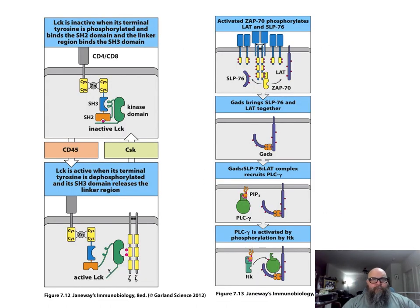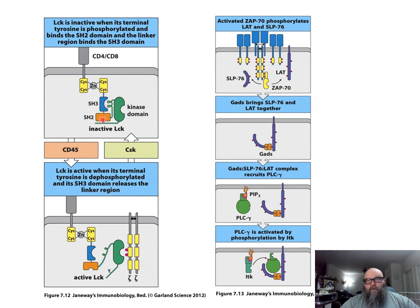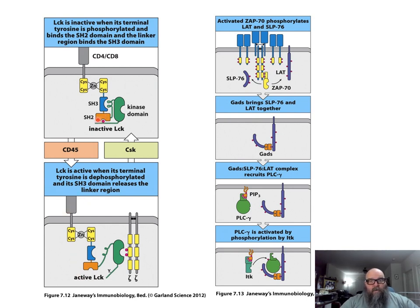Looking at CD4 or CD8 depending on which type of T cell, here's the cytoplasmic tail, and it has a cis-zinc motif. Attached to it at the terminal end are SH3 and SH2 domains. It turns out the SH2 domain, when it's phosphorylated, holds LCK in an inactive state. When CD4 becomes stable, this opens up and allows other signaling proteins — CD45 for one — to come in and remove that phosphate group, which allows LCK to become an active kinase.